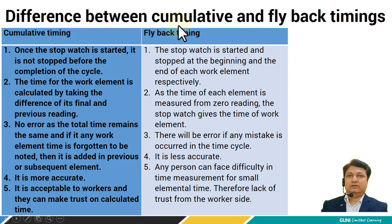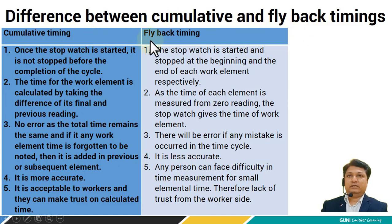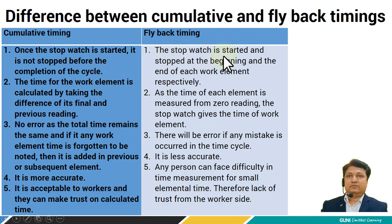Now let's see the difference between cumulative timing and flyback timing. When we measure the time, it can be measured with the help of a stopwatch, which can be cumulative type or flyback type. In cumulative timing, once the stopwatch is started, it is not stopped before the completion of the cycle. In flyback timing, the stopwatch is started and stopped at the beginning and end of each work element respectively.